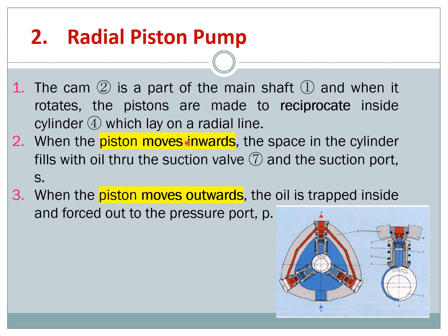The cylinders lie on the radial line. When the piston moves inward, the space in the cylinder fills with oil through the suction valve, so the oil moves inside. When the piston moves outward, oil is trapped inside and forced out at the pressure port P. There are three pistons in this example, so the system can trap and hold that particular oil before sending it out. That is the radial piston pump.